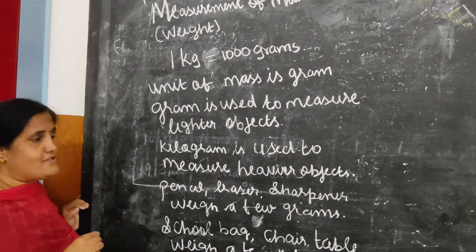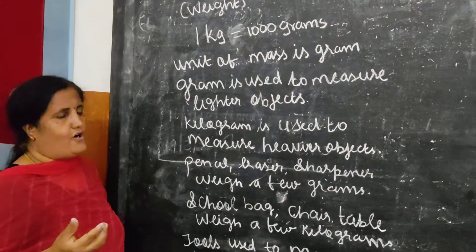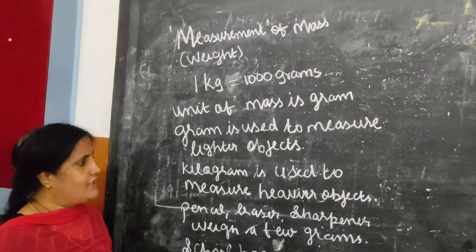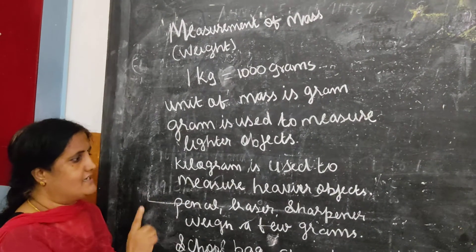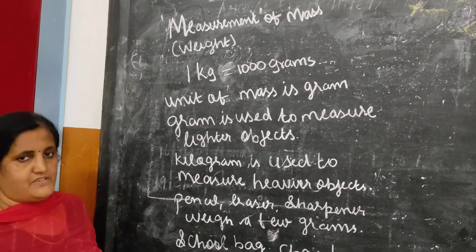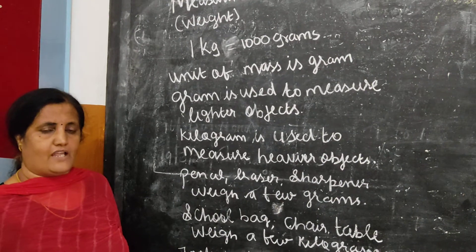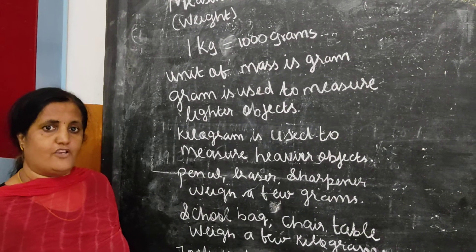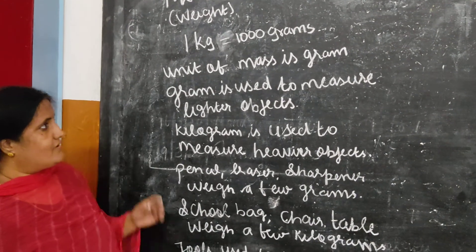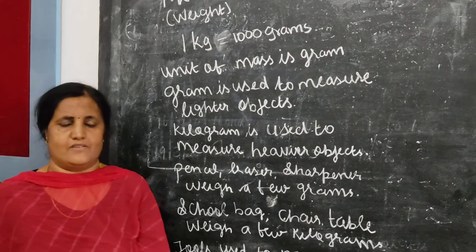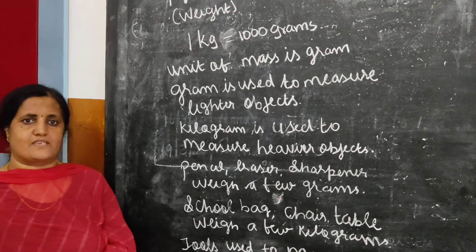Gram is used to measure light objects, and kilogram is used to measure heavy objects. Rice and all the everyday objects we use are measured in kilograms, while lighter things in the house are measured in grams.